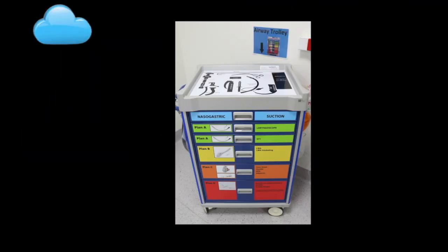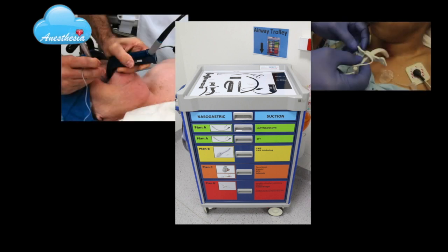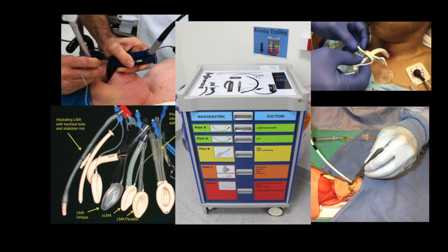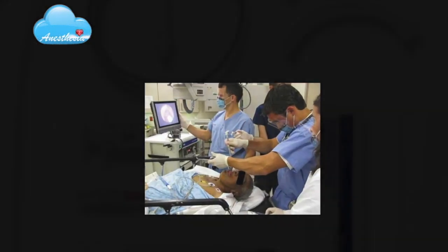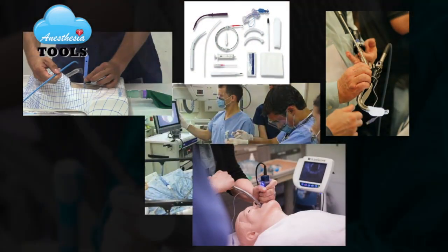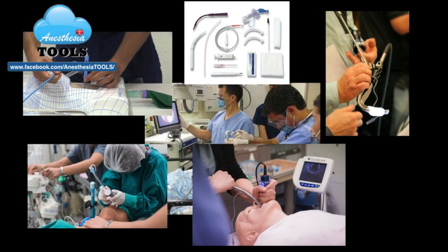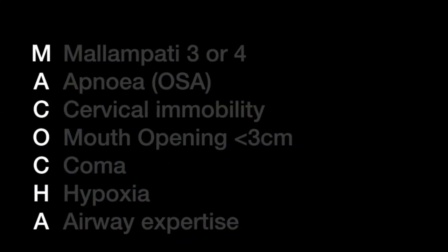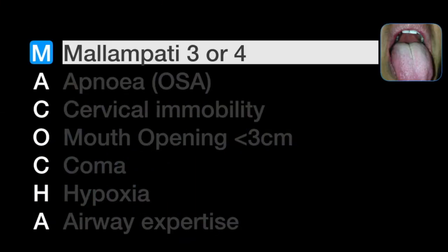Most conventional tests used for predicting difficult airway focus on anatomical features that make glottis visualization difficult, and are difficult to perform in patients requiring emergency intubation. When it comes to predicting difficult intubation in the ICU, more indices come into play — for example, physiological factors and operator experience in airway management. The Makocha score has been recently developed to identify patients with potentially difficult airway in the ICU.